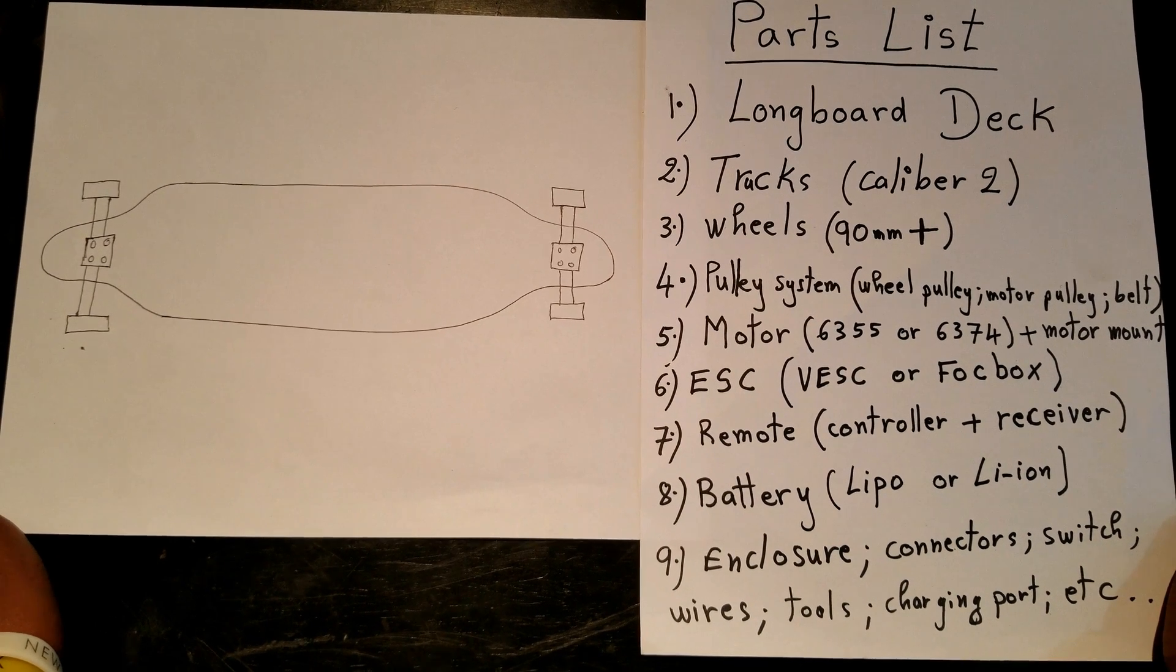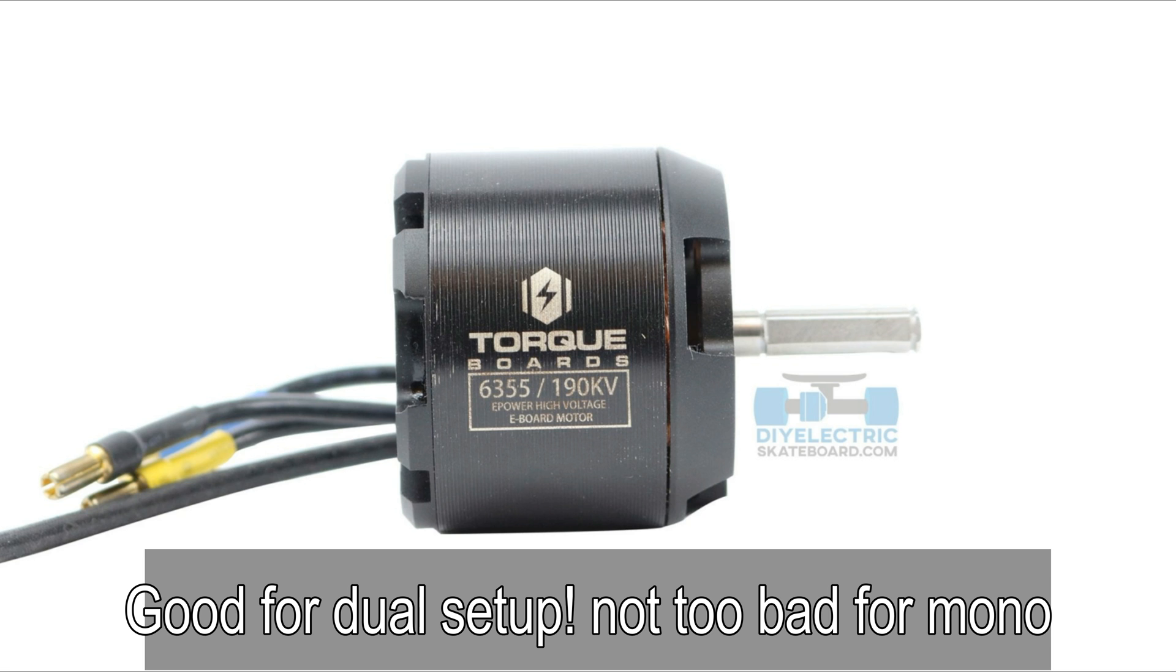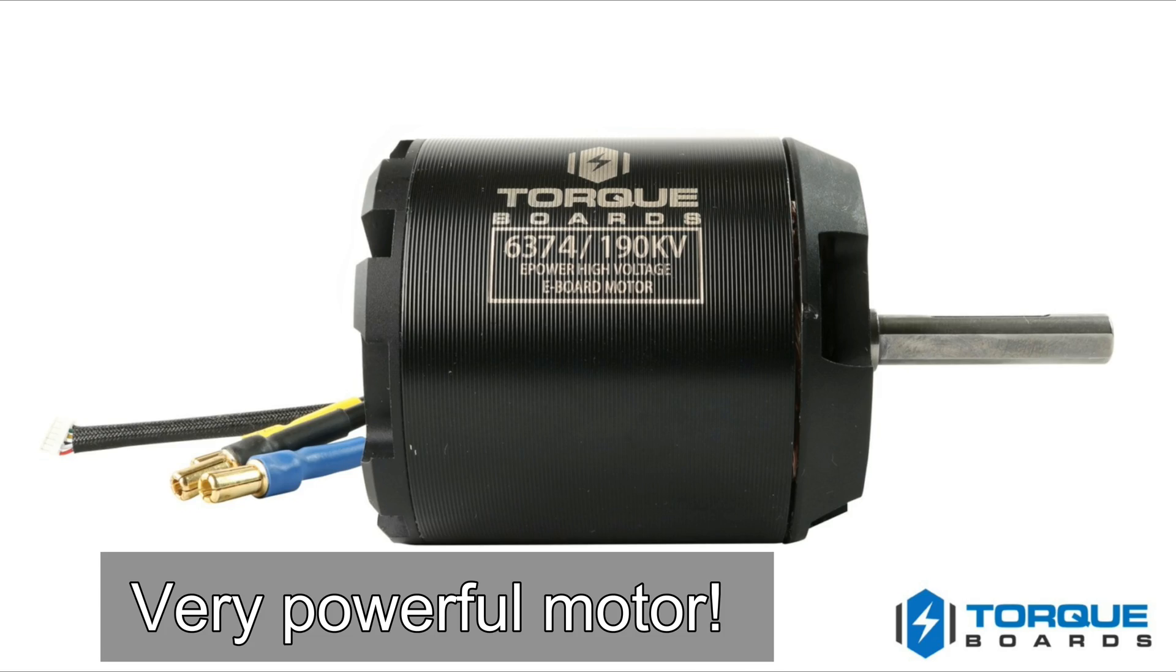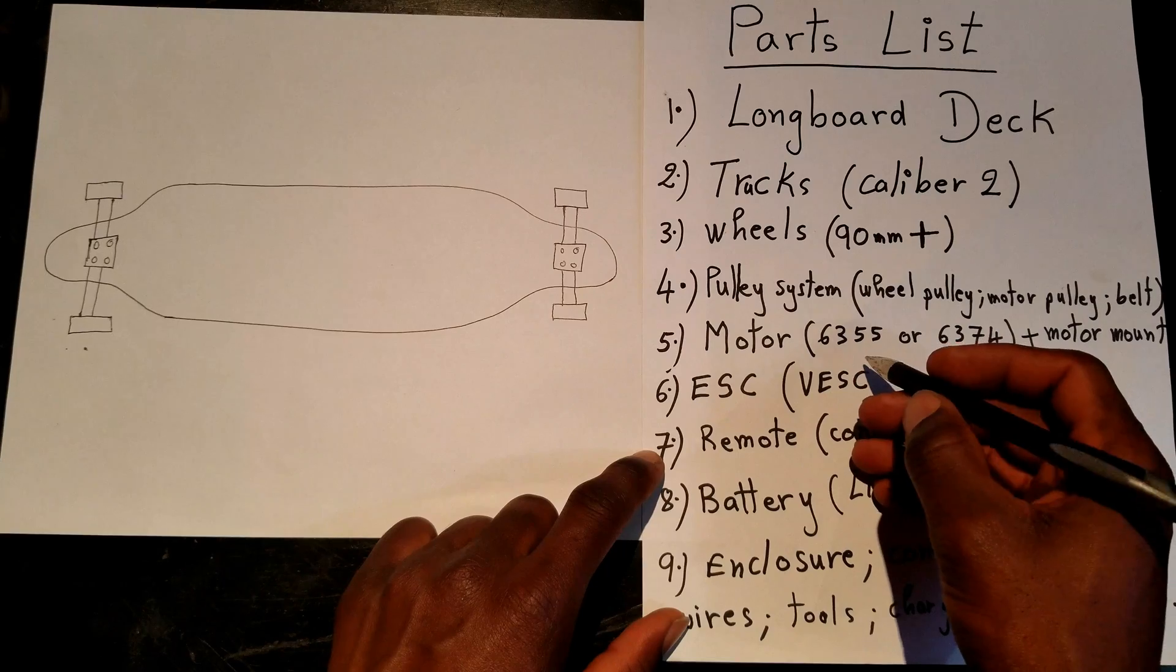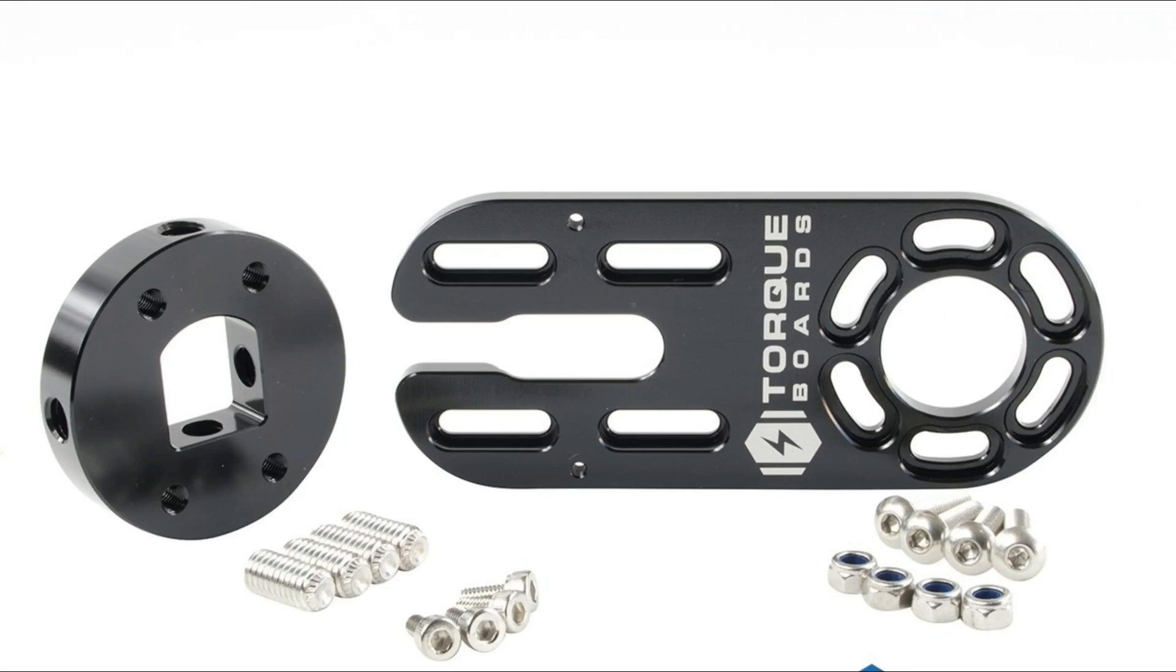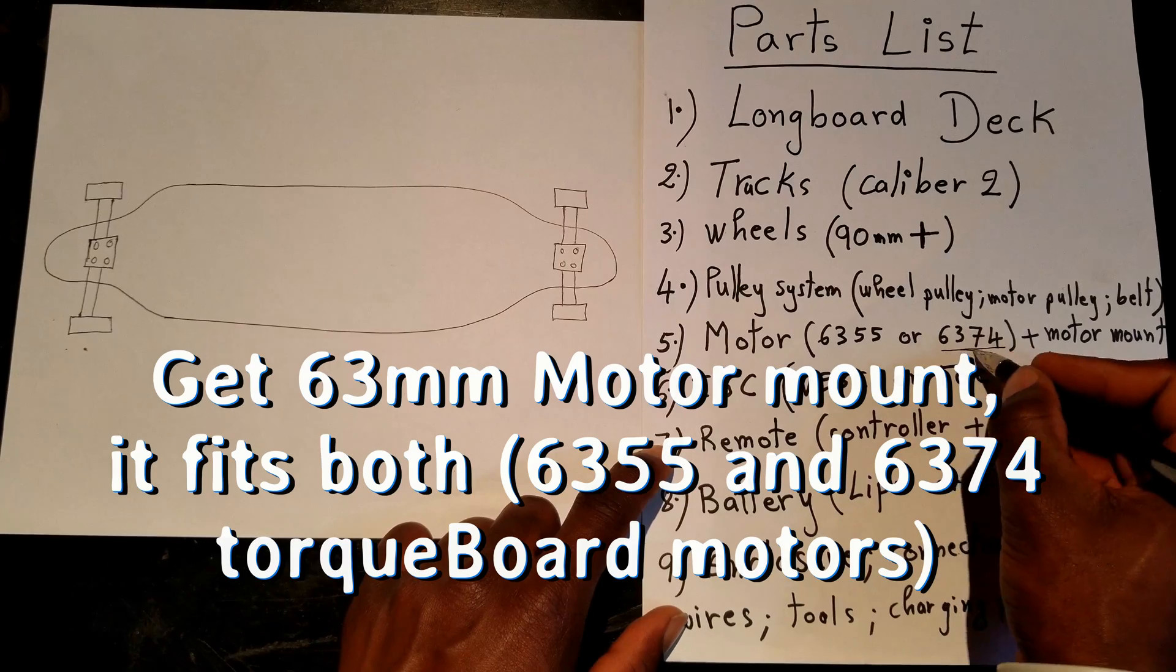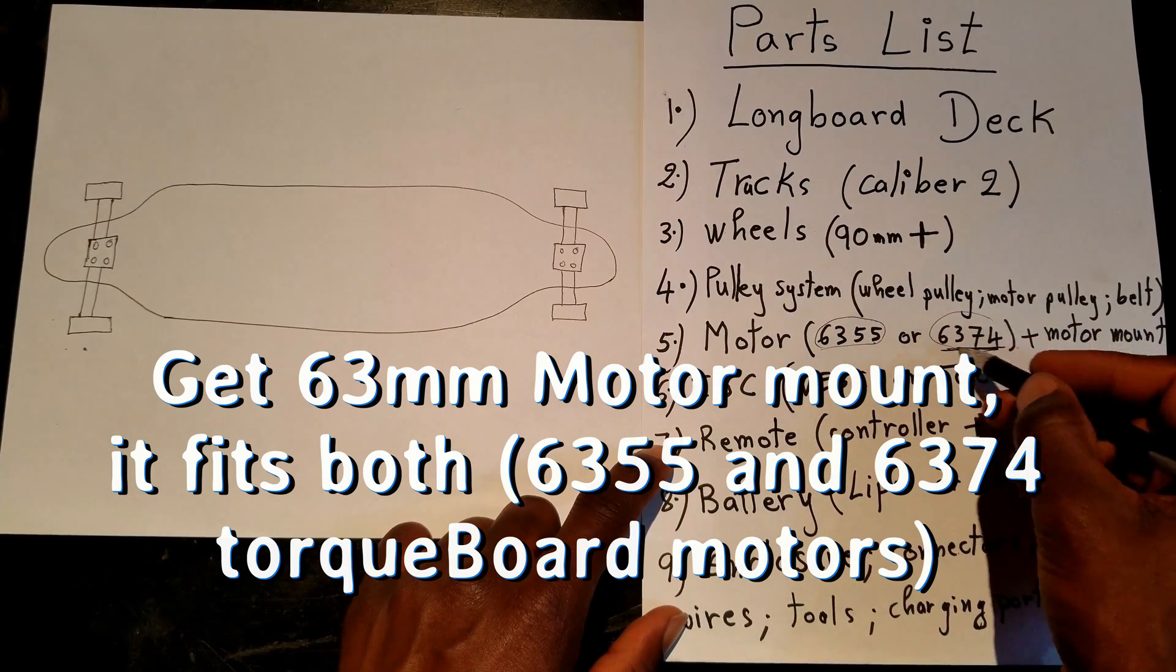Next on the list is the motor. You can decide to use a 6355 millimeter motor or a 6374 millimeters motor. Make sure that if you are using a 6355 motor, you can use the motor mount for 6374. Get the motor mount for 6374 millimeter motor. This way you can attach the smaller motor or the bigger motor.